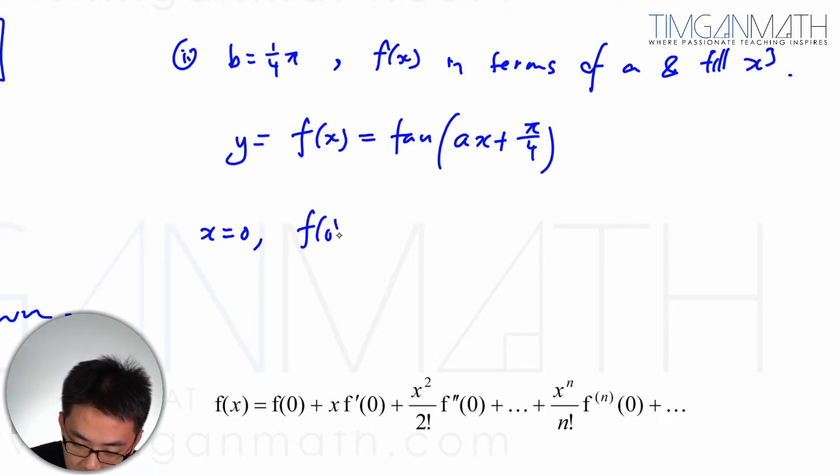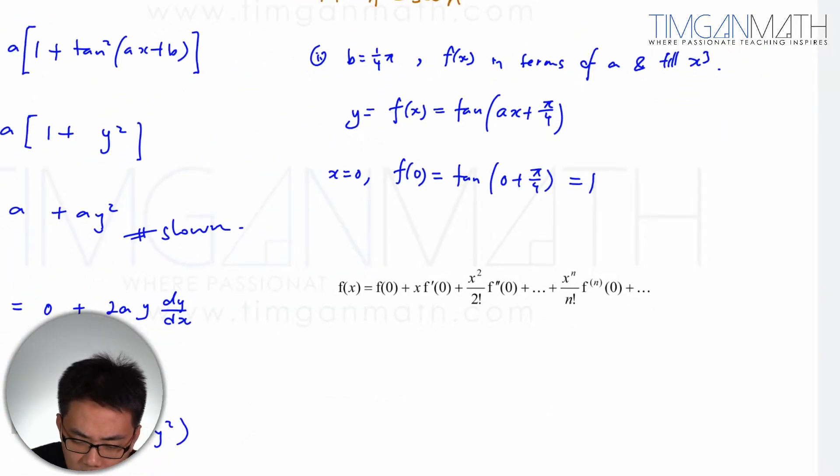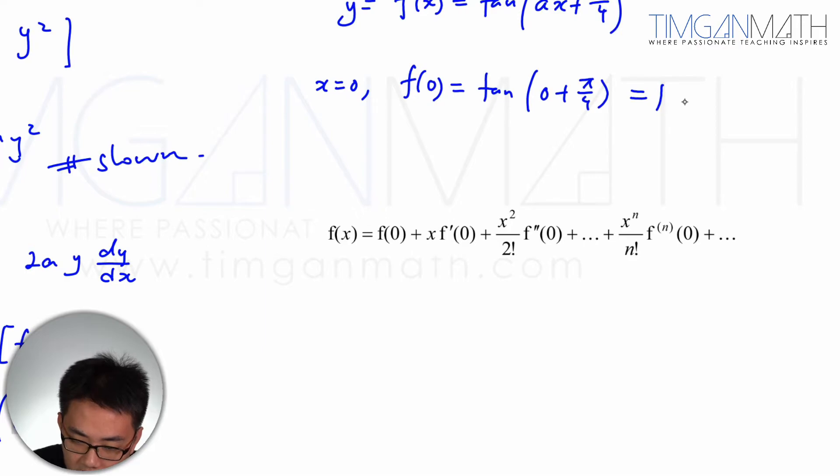So f(0) will just be tan(0 + π/4), and this will give us 1. Yes, that's pretty okay. Then after which, what we're going to do is, this is when y, this is y goes to 1, right?